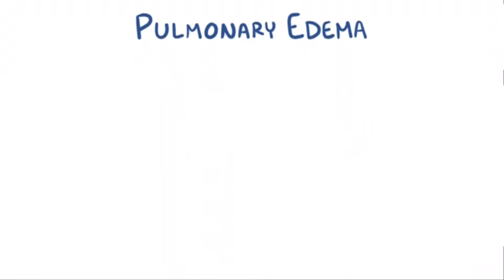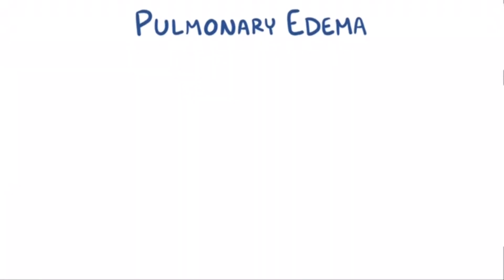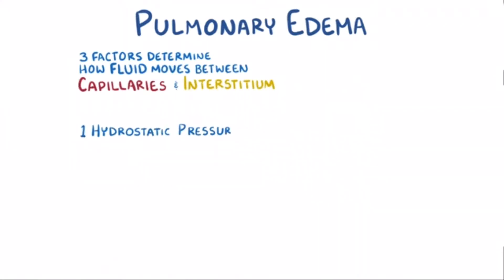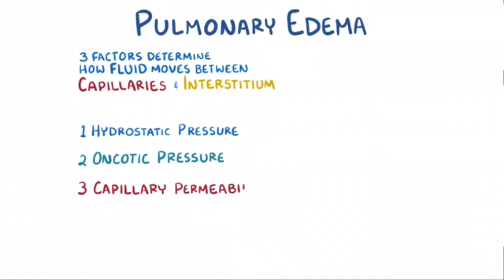To understand pulmonary edema, let's first talk about the three main factors that determine how fluid moves between the capillaries and interstitial fluid, which are the hydrostatic pressure, oncotic pressure, and capillary permeability.